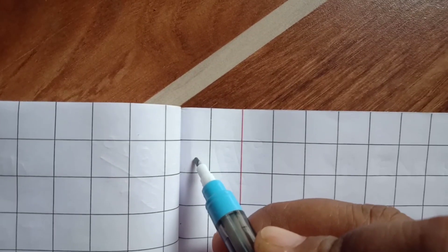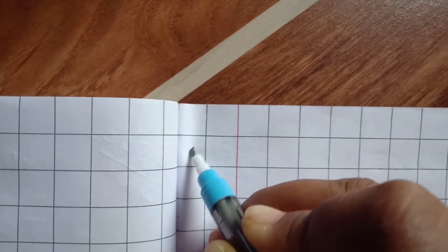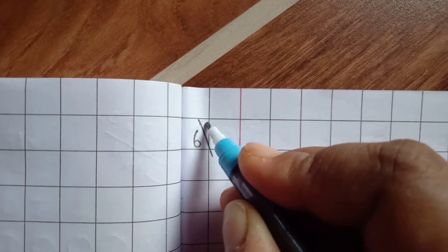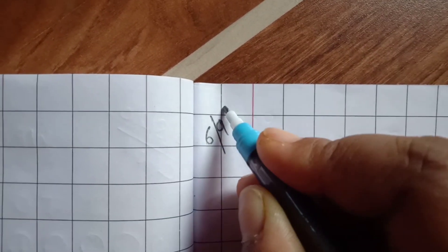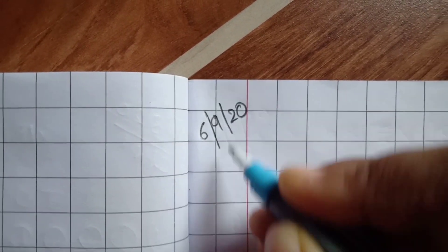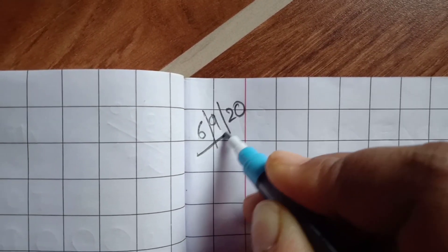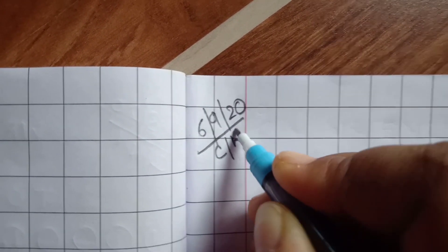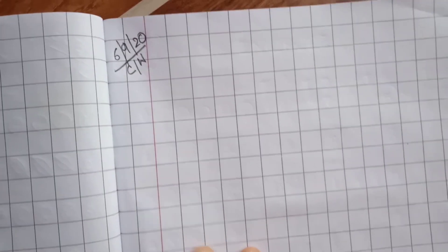First of all, we will write today's date. What's the date? 6, 9 that is September. Here we will write 2020 and then we will write here CW which means classwork. Then on the top we have to give the heading.